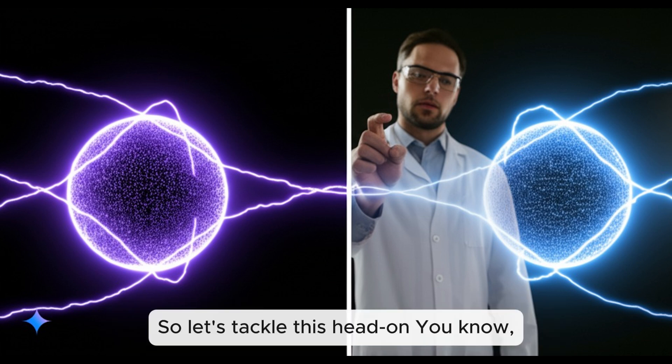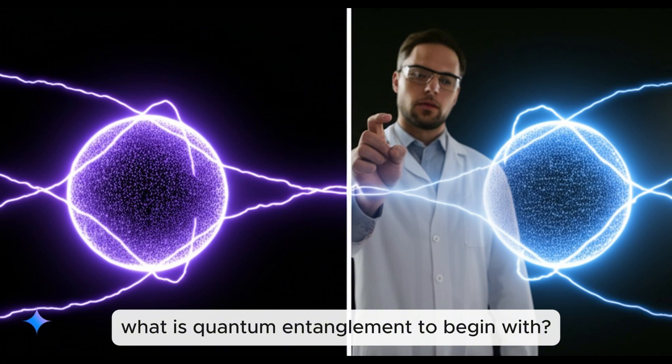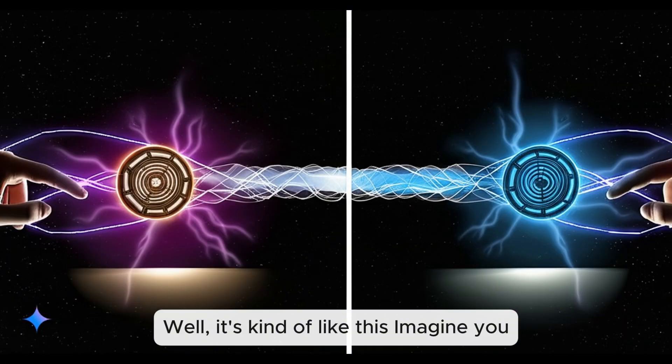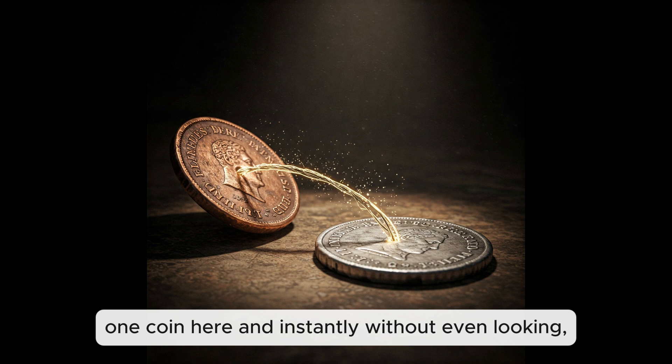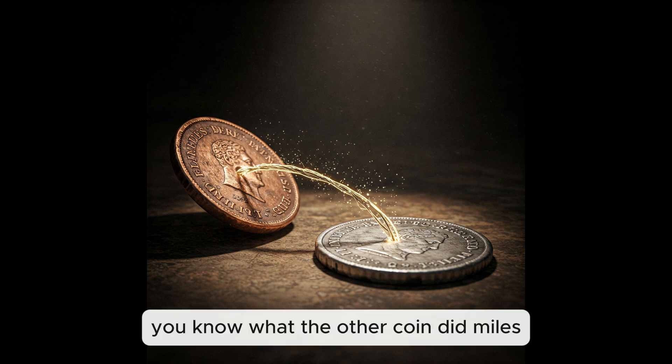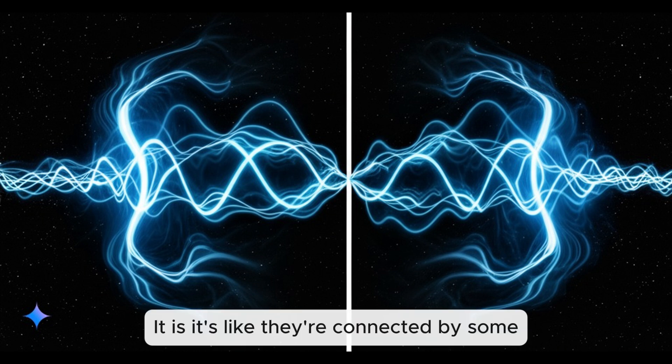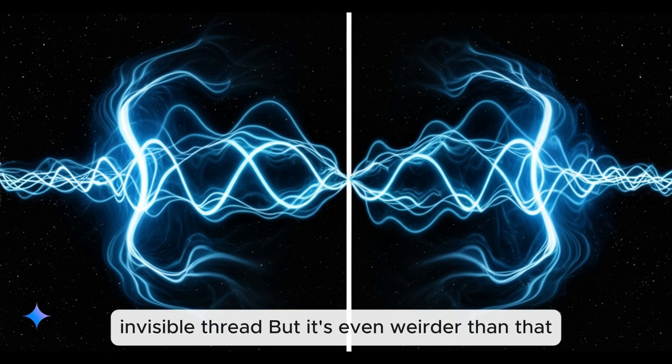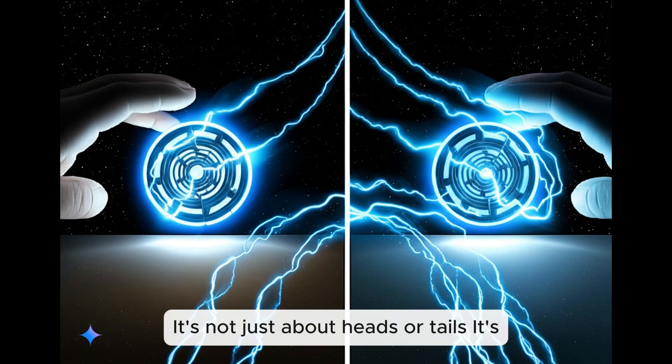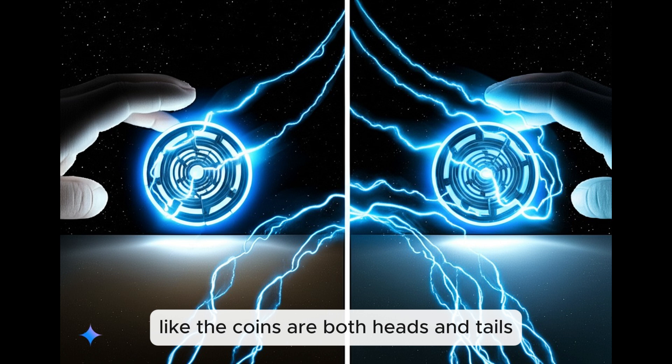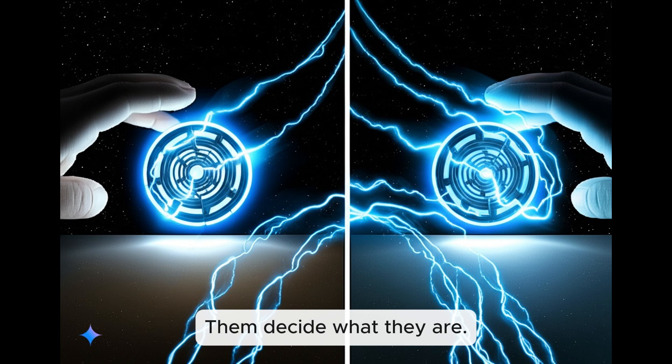So let's tackle this head on. What is quantum entanglement to begin with? Well, it's kind of like this, imagine you have two coins, and they're linked together in some fundamental way. You flip one coin here, and instantly, without even looking, you know what the other coin did miles away. That's a pretty wild concept.